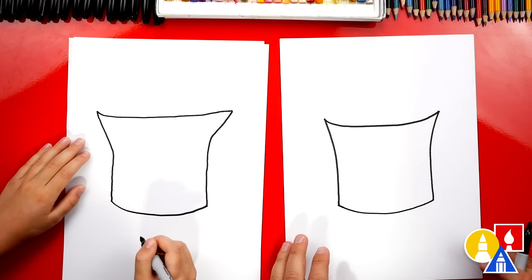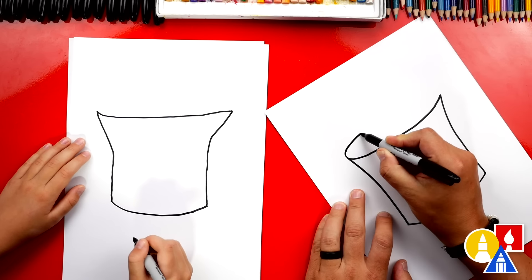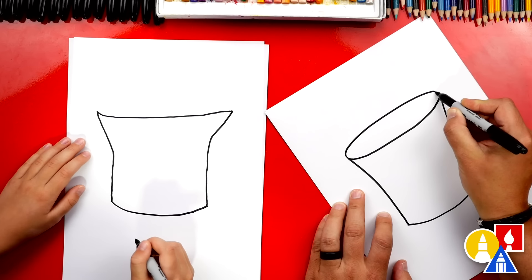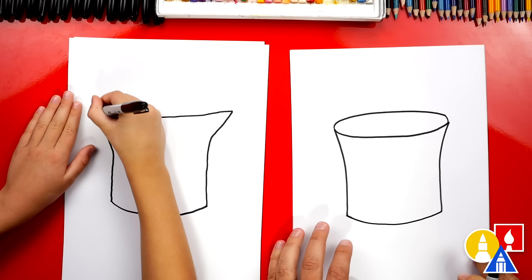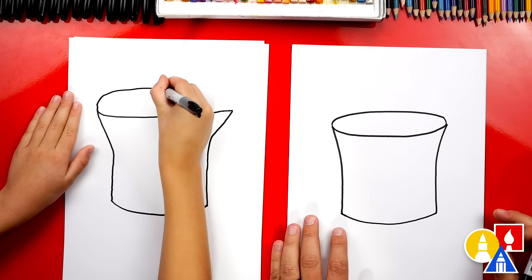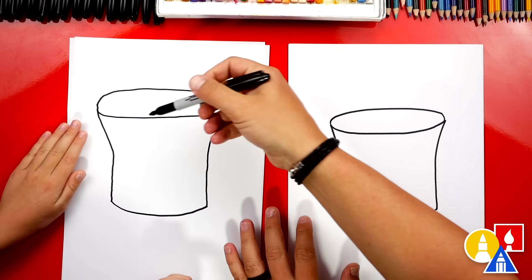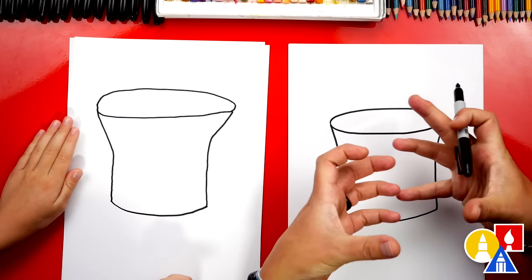Good job. Now we're going to make our hat look 3D by finishing the top and drawing another curve that comes around and it makes it look round and three-dimensional. Good job. And then curve back down and connect. Look at that. It looks like a cylinder or round shape.